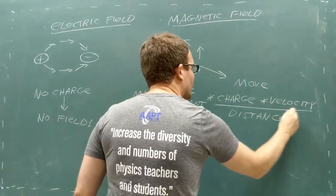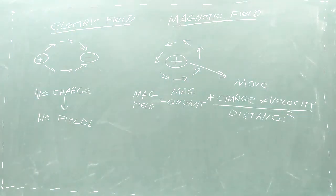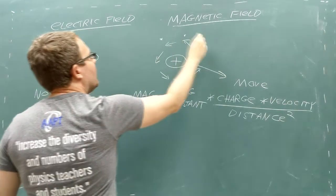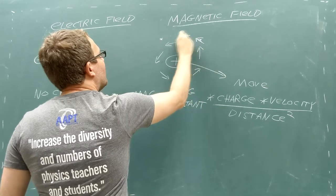Next, we divide by the square of the distance between the charged particle and the location where we're measuring the magnetic field. We'll call this location the observation point in our code.